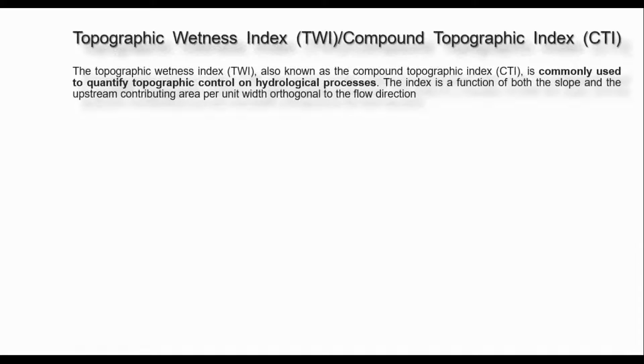Hello and namaste, welcome to my channel Jeen and Nepal. Today I am going to prepare the Topographic Wetness Index map, which is also known as the Compound Topographic Index map. It is commonly used for quantifying the topographic control on hydrological processes, and the index is a function of both the slope and the upstream contributing area.